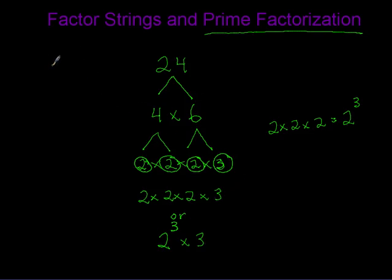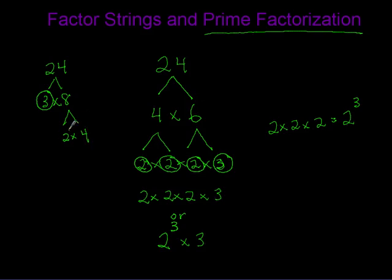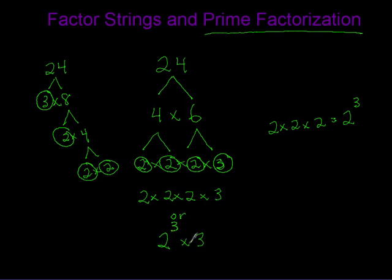Just to show it doesn't matter which one you start with, let's do another factor tree for 24, this time starting with three times eight. Three is a prime number, so I'm going to circle it. Eight breaks down to two times four; two is prime so I circle it, and four is two times two — both prime. So again we get two times two times two times three, or two to the third power times three.